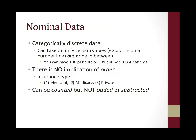Nominal data is categorically discrete data. It can take on only certain values — for example, points on a number line, but none in between. An example would be counting the number of patients: you can have 108 patients or 109 patients, but not 108.4 patients. There is no implication of order with nominal data. You may have insurance type coded as 1, 2, or 3 — 1 being Medicaid, 2 being Medicare, 3 being private insurance — but these are just designations, just labels. There is no implication of order with these.